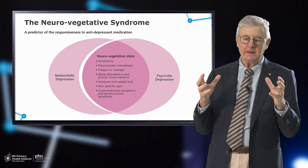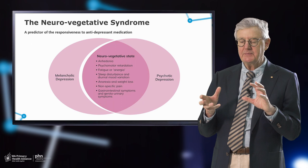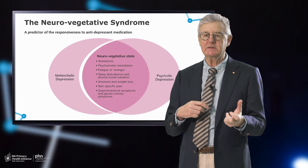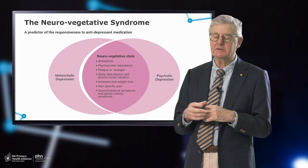The neurovegetative syndrome is very valuable and useful because it helps us recognise that what we're dealing with is melancholic depression. It also reminds us that many of the physical symptoms that people present to GPs with may involve depression — as you're all familiar with Murtagh, who includes depression in his top 10.